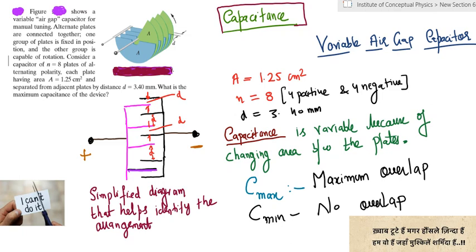There is one which is called a variable air gap capacitor. Now this capacitor is used largely in alternating circuits, and AC is one of the topics you have to study as part of the class 12 course.